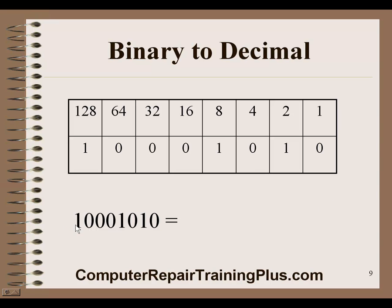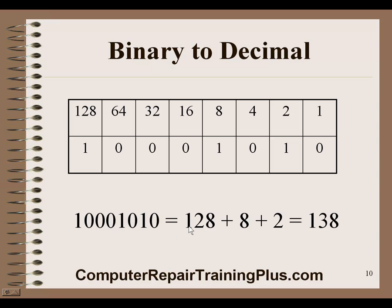Let's do another one. Now we have 1, 0, 0, 0, 1, 0, 1, 0. We're going to have a 1 in the place for 128, and we still have the 8 and the 2 set. So this time we bring down 128, the 8, and the 2. We add all these together and we get 138. So we've converted another binary number.